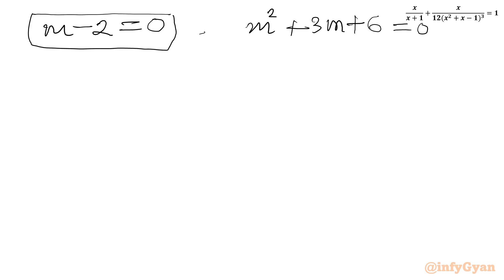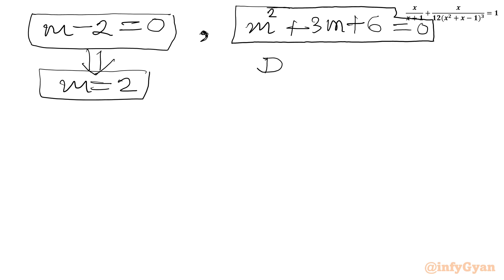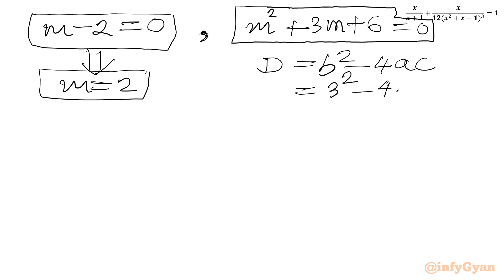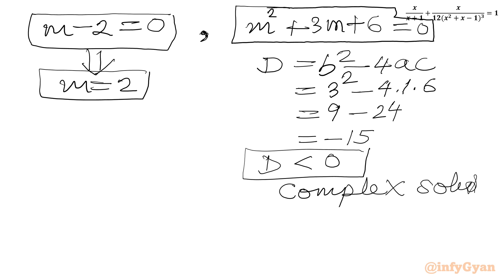From the first factor, m equals 2. For the quadratic, we check the discriminant: D equals b squared minus 4ac equals 3 squared minus 4 times 1 times 6, which is 9 minus 24 equals negative 15. Since the discriminant is negative, we get complex solutions — so this quadratic is rejected. We accept m equal to 2 only.